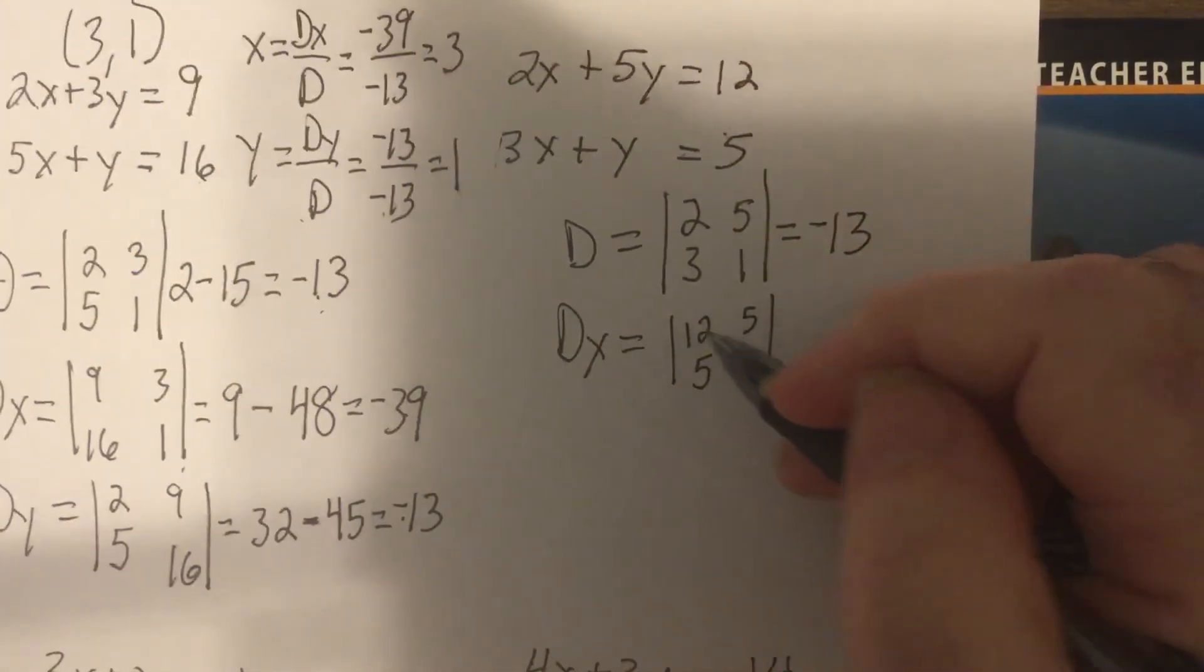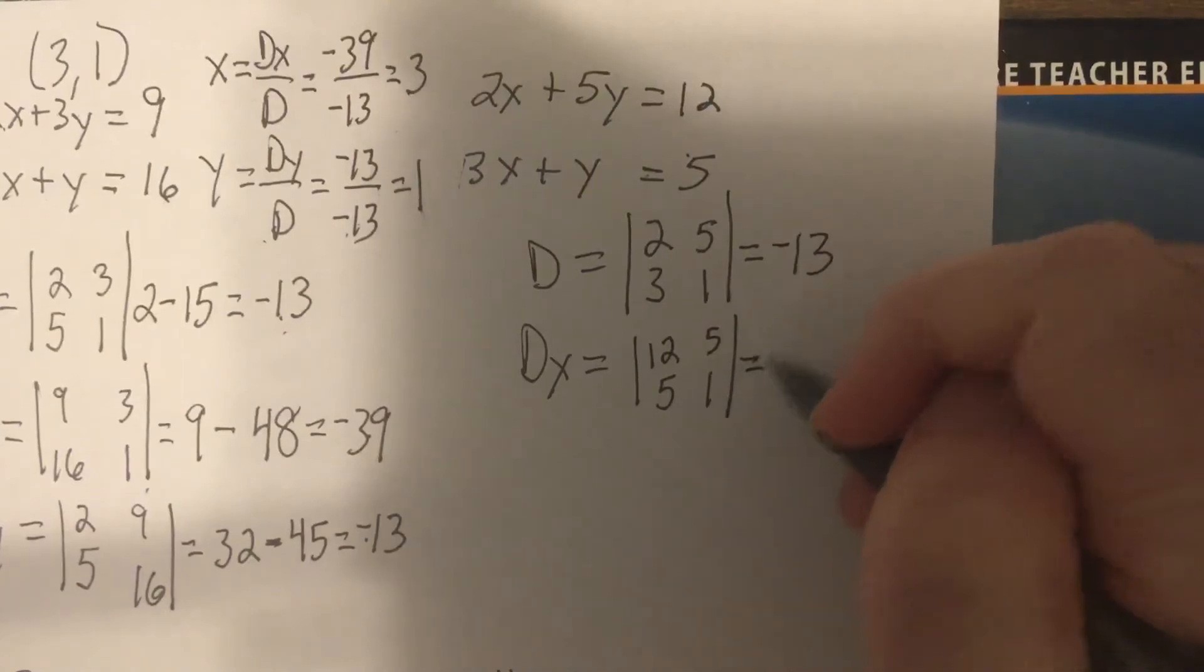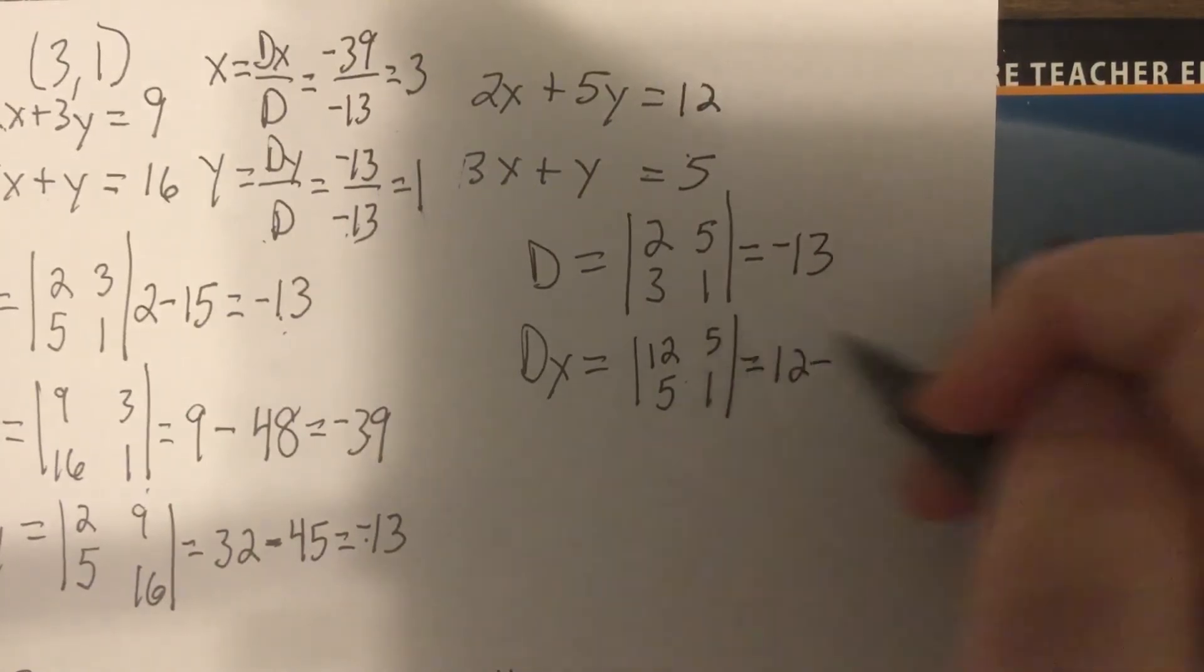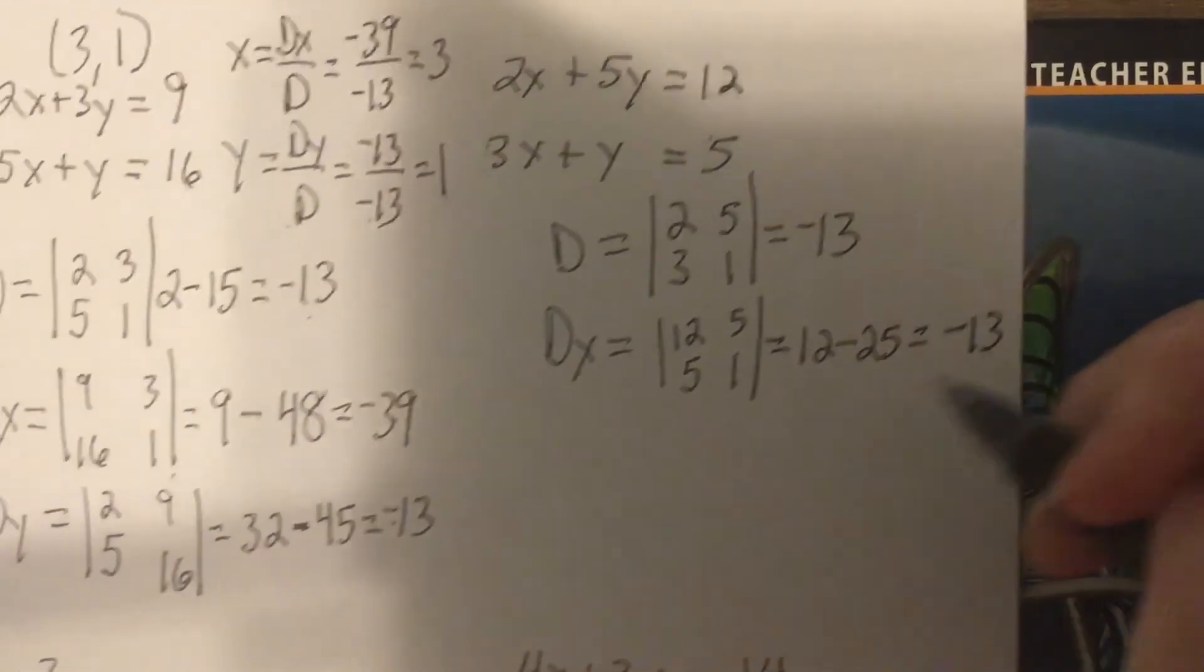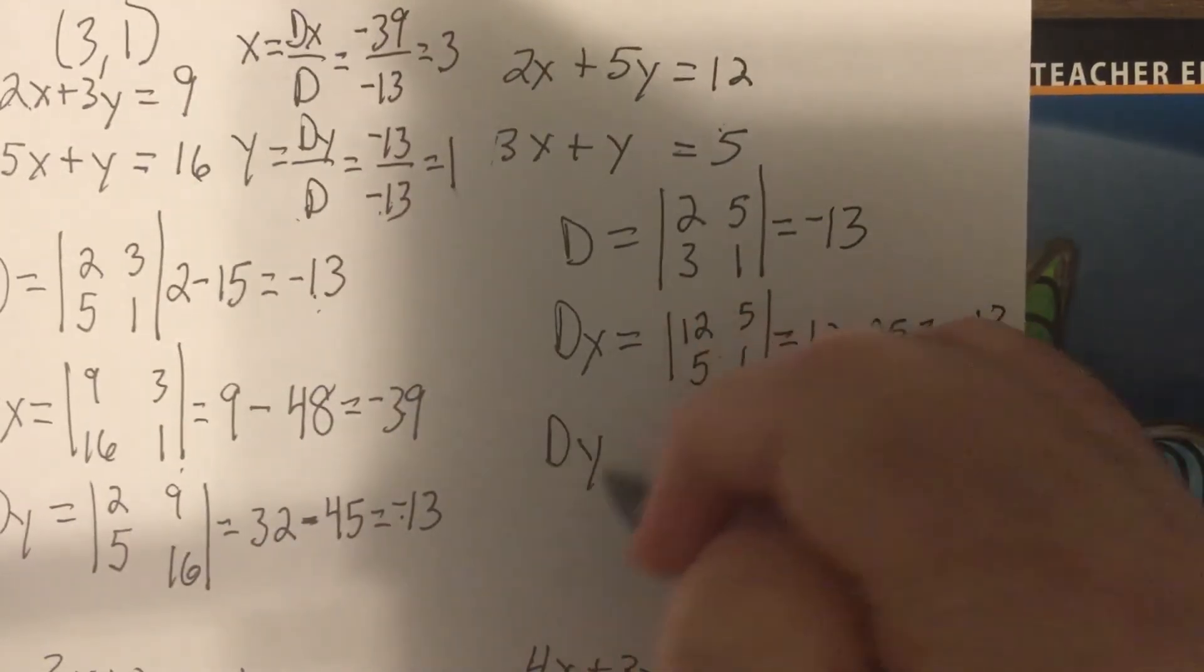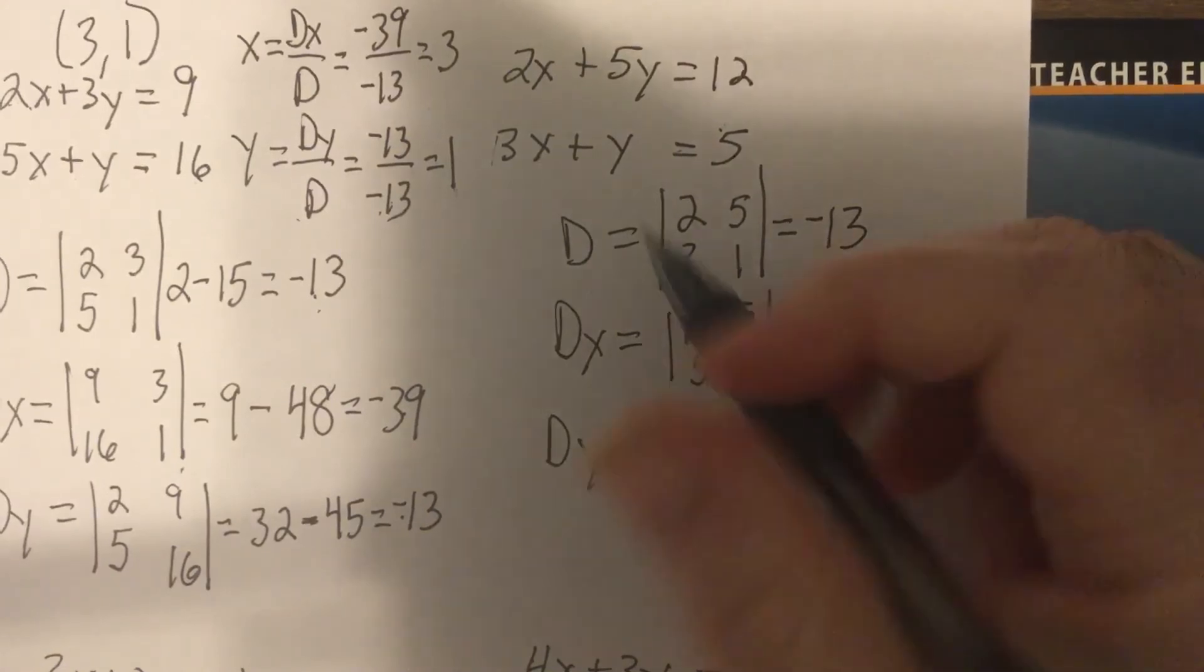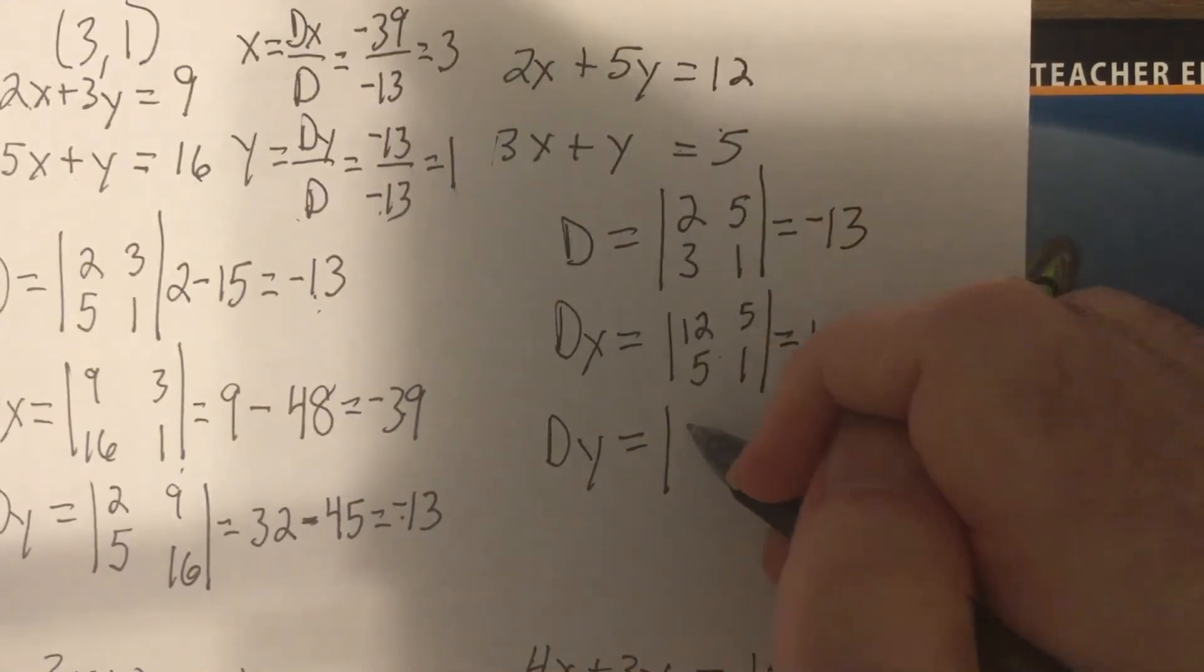So that would be 12 minus 25, which is negative 13. And DY is leave the X coefficients 2, 3